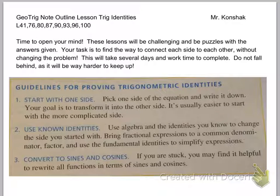They're not that bad. So, to start off here, we've got some general guidance on proving identities, and that might not be the first thing we're starting off with, but we've got to have some basic groundwork here. We're going to start with one side. I always start with one side. Pick one side of the equation and write it down. Your goal is then to transform it to the other side. It's usually easier to start with the more complicated side.